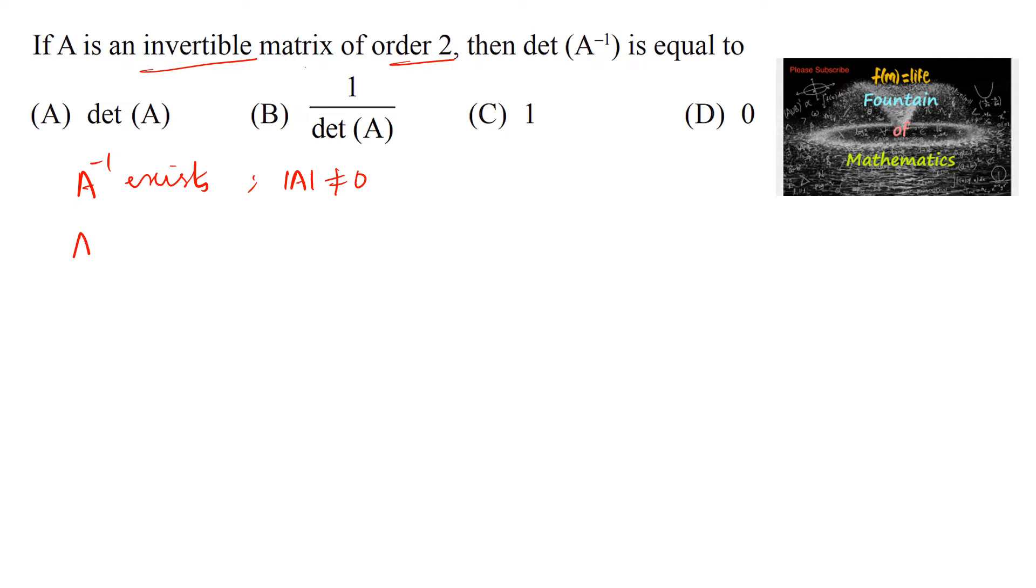And we know that A into A inverse is equal to I, an identity matrix in 2 by 2. That is: 1, 0, 0, 1.